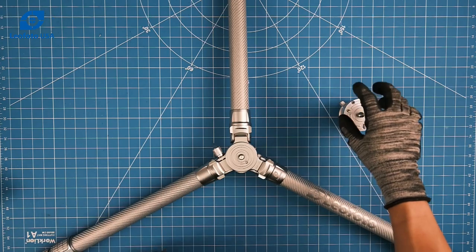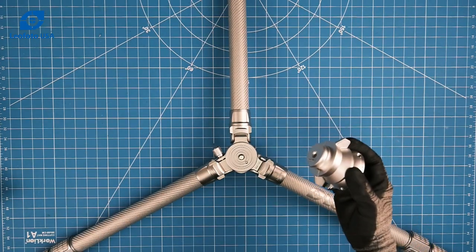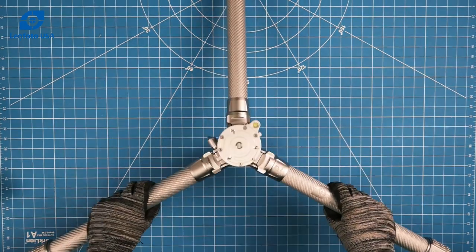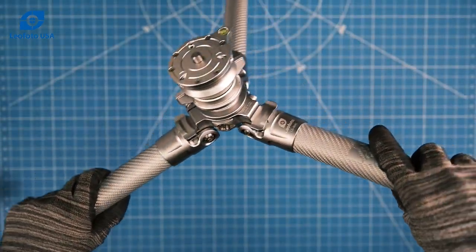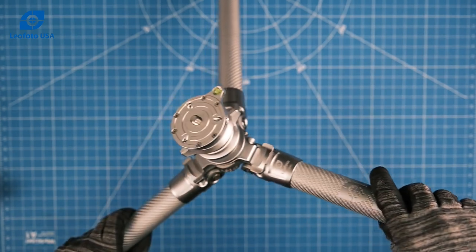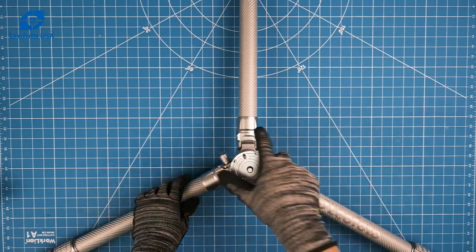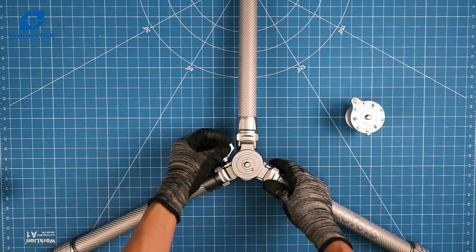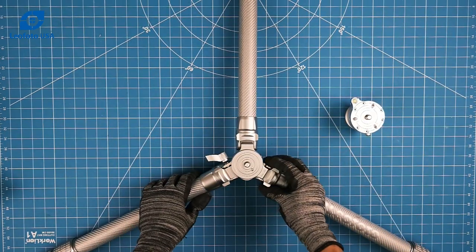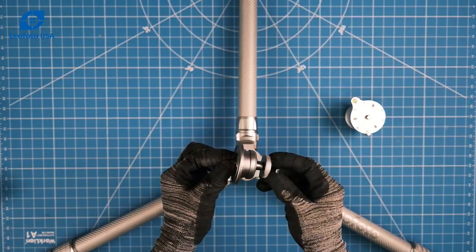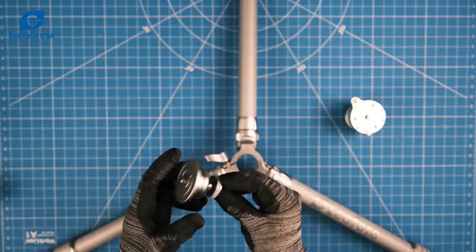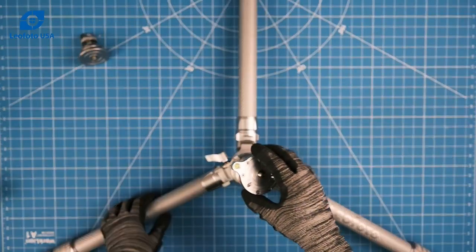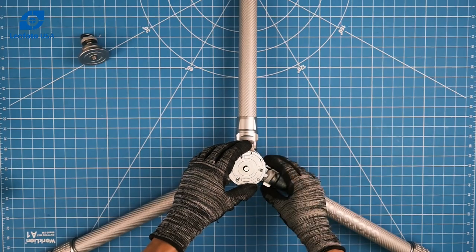You can either mount it via 3/8 screw like a standard leveling base, or you can use the integrated tool to remove the platform or center column and then add the leveling base back in.